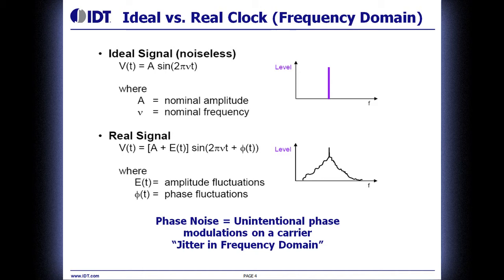Phase noise is the unintentional phase modulation on that specific carrier frequency — it's the noise on the clock. The easiest way to think about it: it's jitter, but in the frequency domain instead of the time domain.